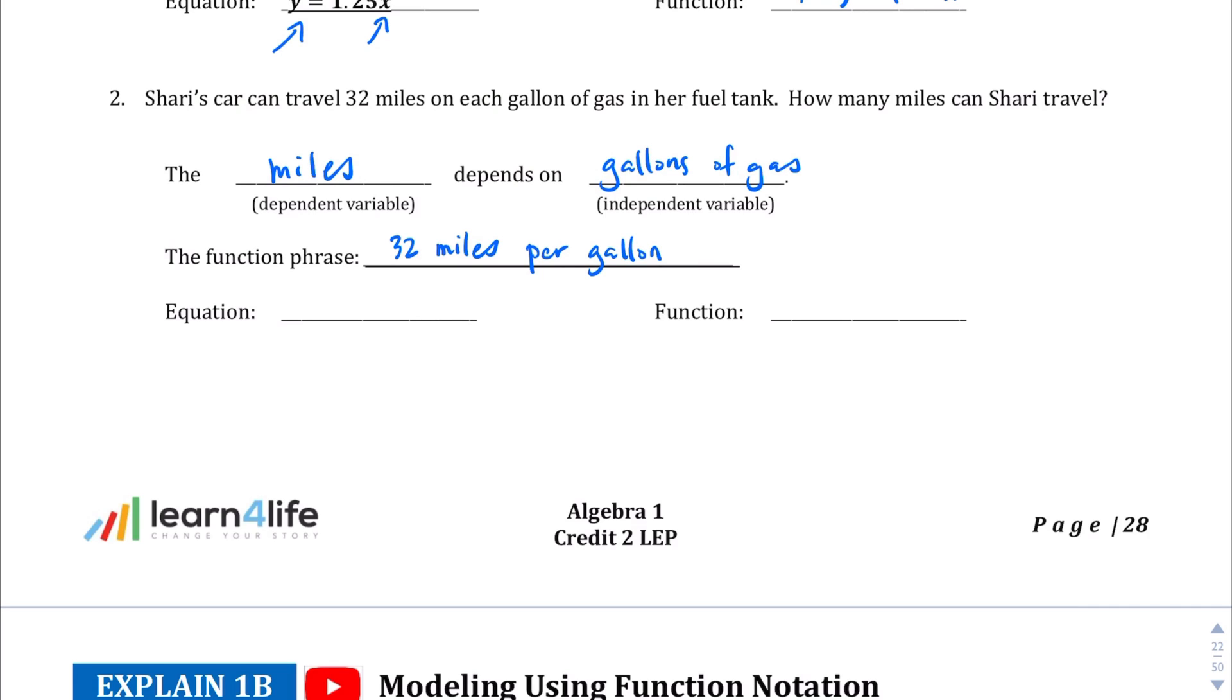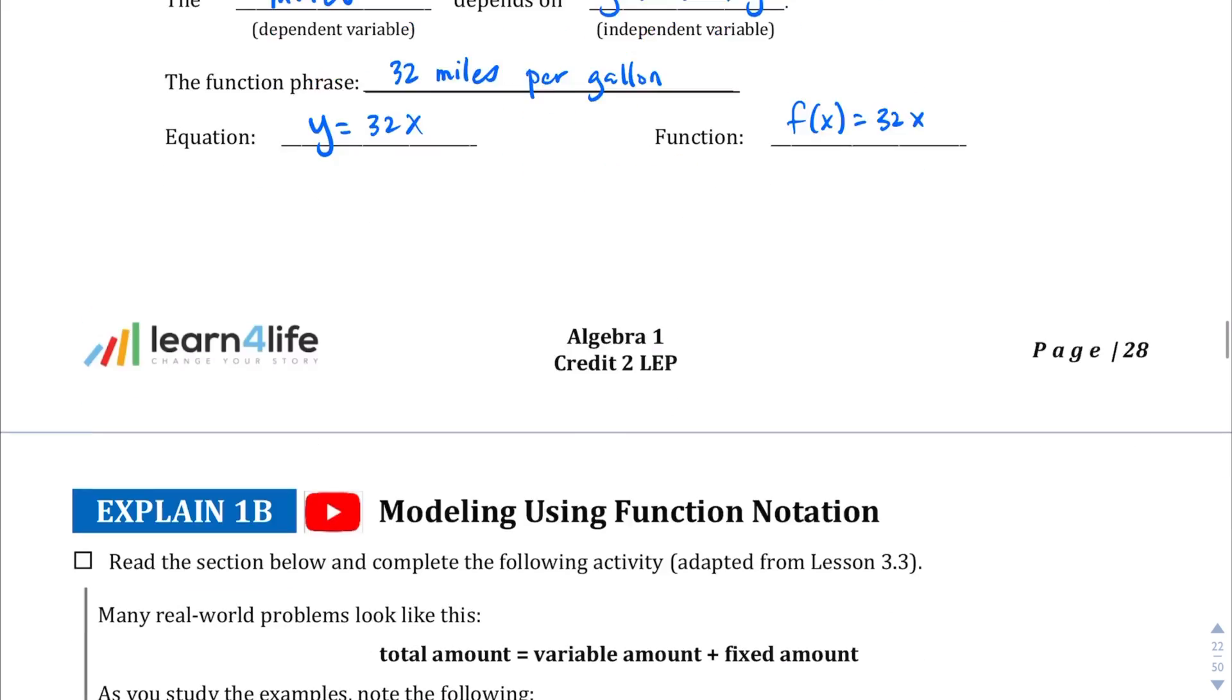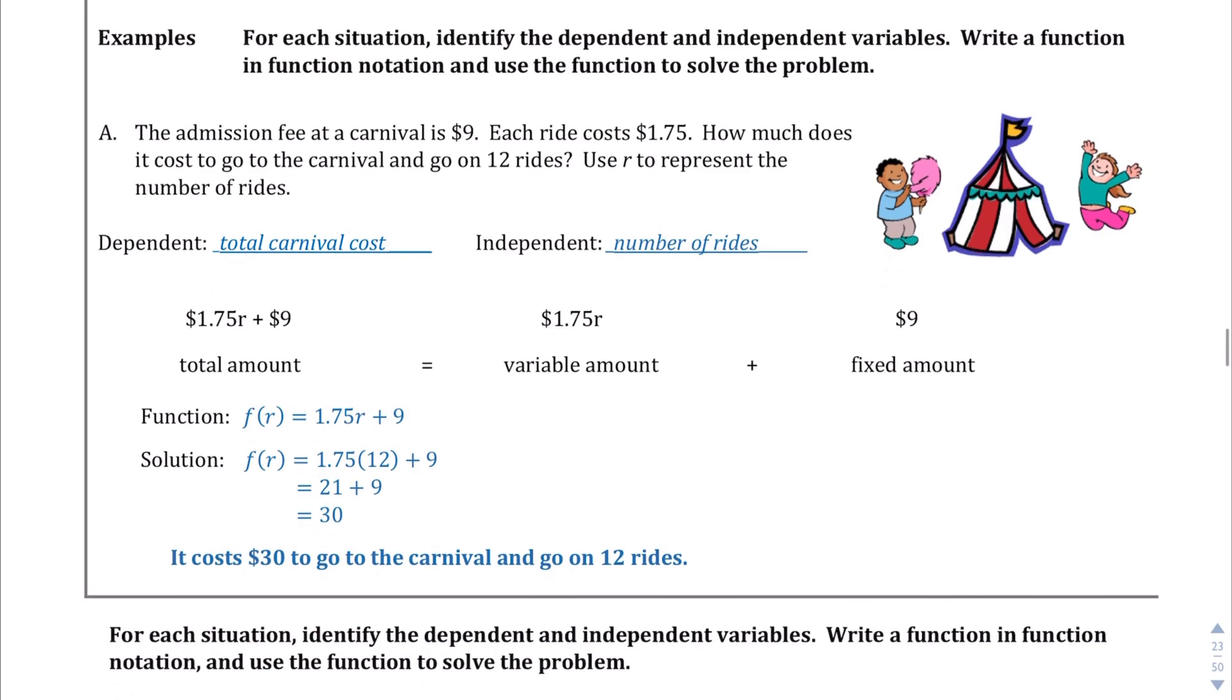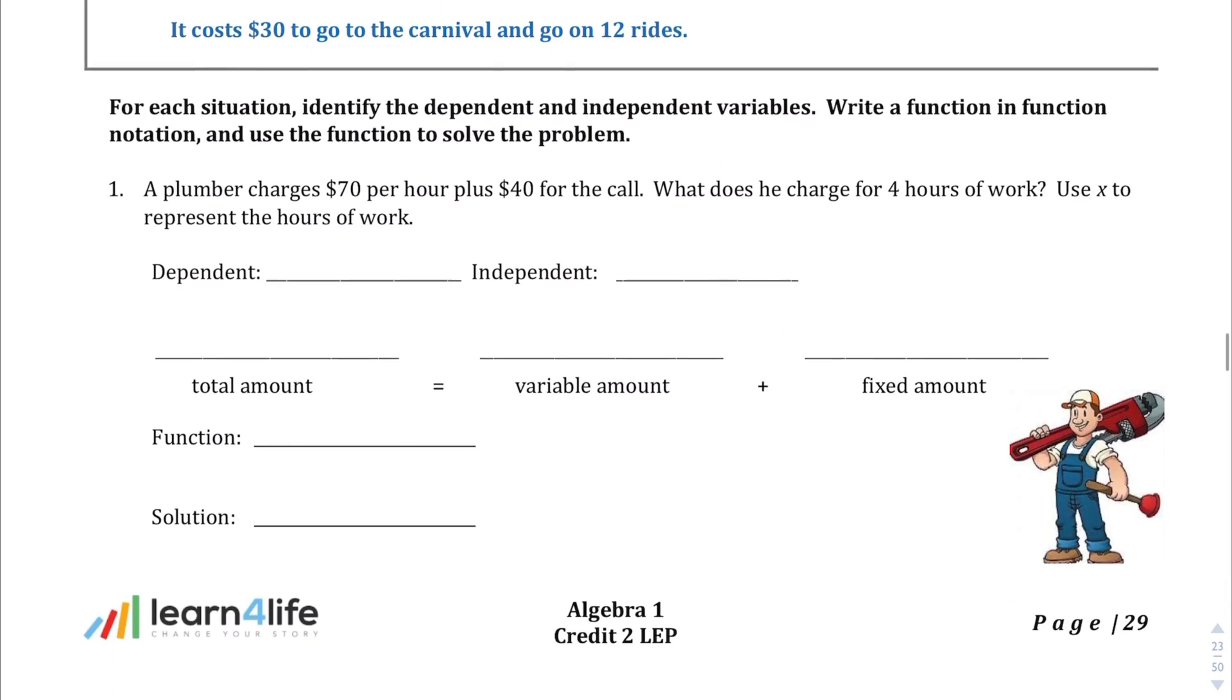So the function phrase is 32 miles per gallon, which is actually pretty decent gas efficiency there. So the equation is going to be y equals 32 times x, where x is the number of gallons. And the function notation is going to be f(x) is equal to 32x. Okay, this next part, Explain 1B, I'm going to let you read that yourself.